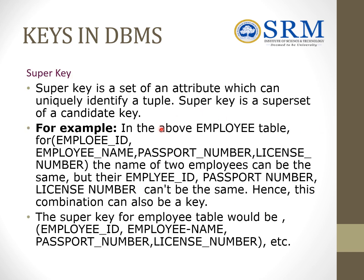Coming to the super key: a super key is a set of attributes which can uniquely identify a tuple. Super key is a superset of a candidate key — so super key includes the candidate key. For example, in the employee table, the names of two employees can be the same, but their employee ID, passport number, and license number cannot be the same. Hence this combination can also be a key. A super key of the employee table would be employee ID, employee name, passport number, and license number.